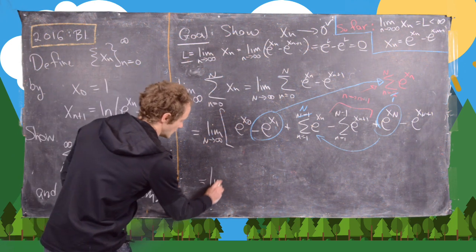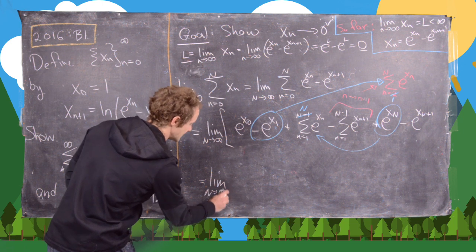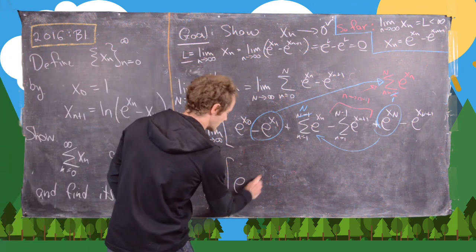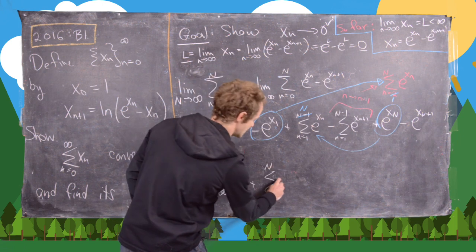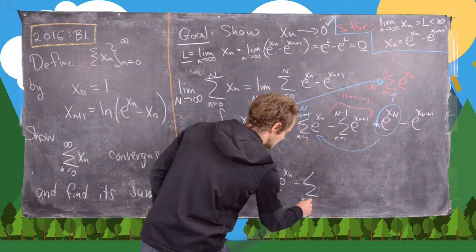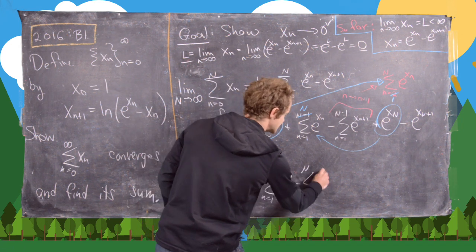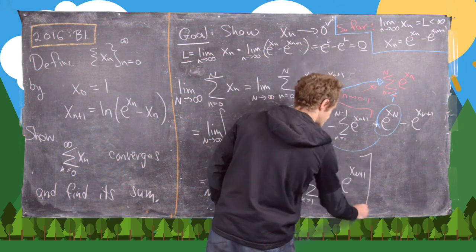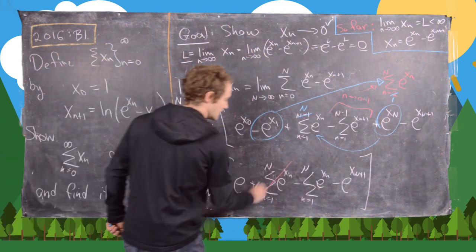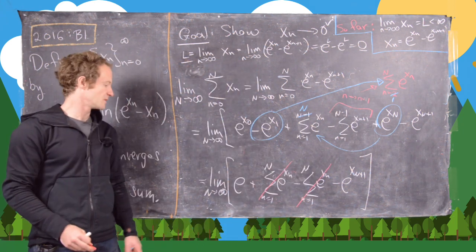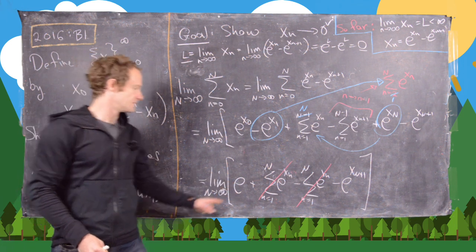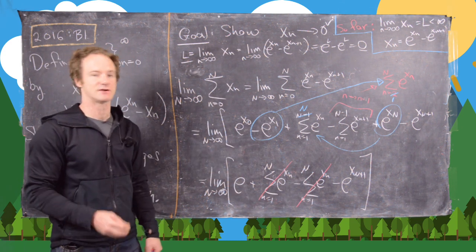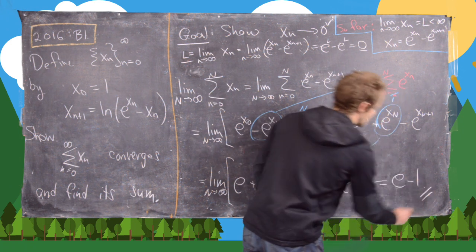What we're left with is the limit as N → ∞ of: eˣ⁰ plus the sum from n = 1 to N of eˣⁿ, minus the sum from n = 1 to N of eˣⁿ, minus eˣᴺ⁺¹. The two sums cancel. Since x₀ = 1, we have eˣ⁰ = e, which is a constant. And since xₙ → 0, we get eˣᴺ⁺¹ → e⁰ = 1. So the final answer is e - 1.